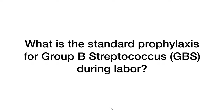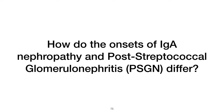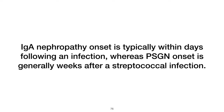What is the standard prophylaxis for group B Streptococcus (GBS) during labor? The standard prophylaxis for GBS during labor is administration of ampicillin or penicillin. For those allergic to penicillin, a cephalosporin is used as an alternative. How do the onsets of IgA nephropathy and post-streptococcal glomerulonephritis (PSGN) differ? IgA nephropathy onset is typically within days following an infection, whereas PSGN onset is generally weeks after a streptococcal infection.